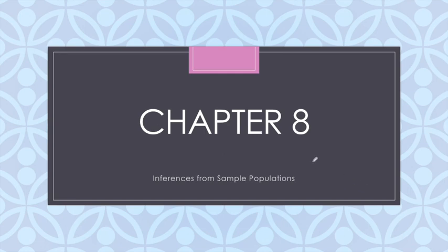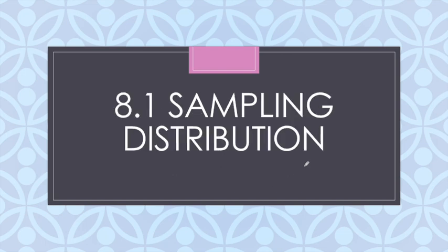All right class, today we're going to cover chapter 8, which is about sample populations. The first thing we're going to do in this video is cover section 8.1, which is about sampling distributions. There are two different types of sampling distributions we're going to look at: distribution of sample means and distribution of sample proportions.